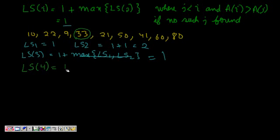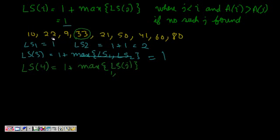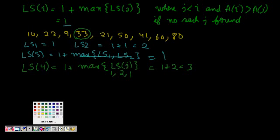For LS(4) with element 33: LS(3) is 1 and 9 < 33, so that's one candidate with value 1. LS(2) is 2 and 22 < 33, giving value 2. LS(1) is 1 and 10 < 33. The maximum is 2, so LS(4) = 1 + 2 = 3. The subsequence [10, 22, 33] is possible.